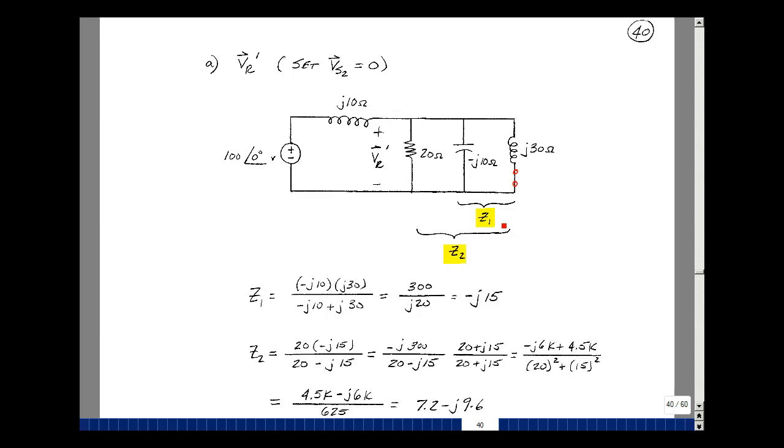Now I'll take that result and put it in parallel with this, again with product over the sum. So 20 times minus j15 over 20 plus a minus j15. So this gives me a minus j300. I multiply by the complex conjugate to get this into rectangular form. So 20 plus j15, 20 plus j15, just multiplying by 1.